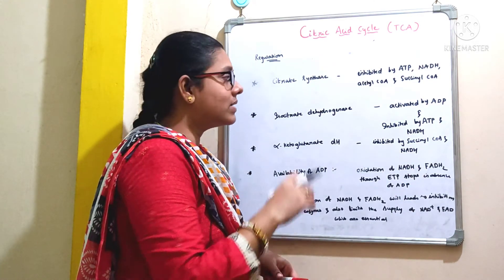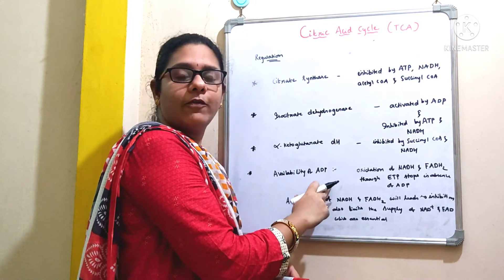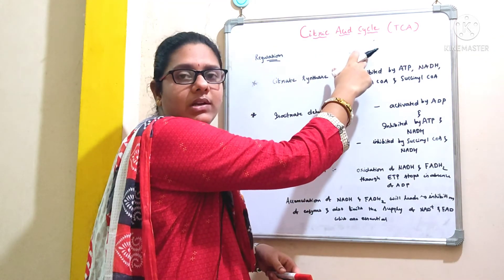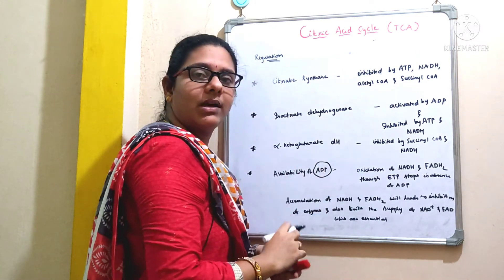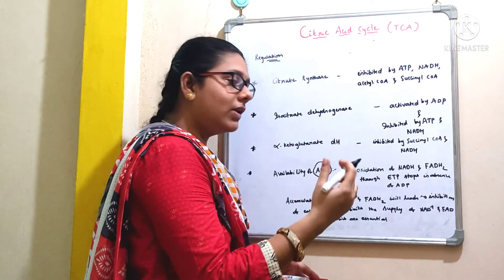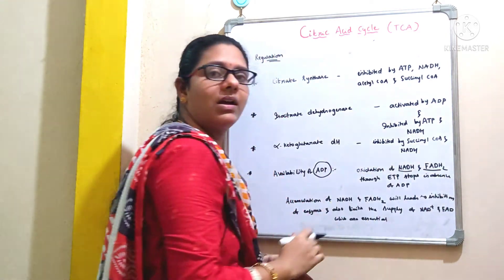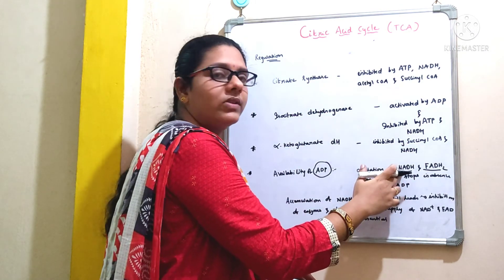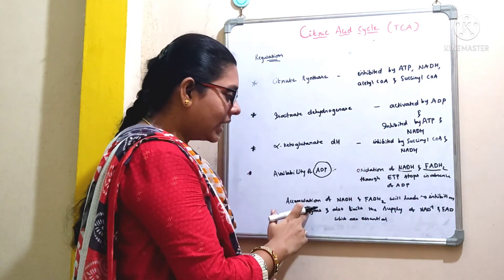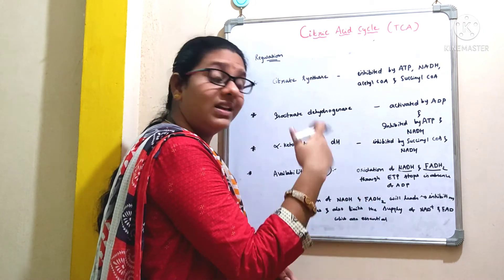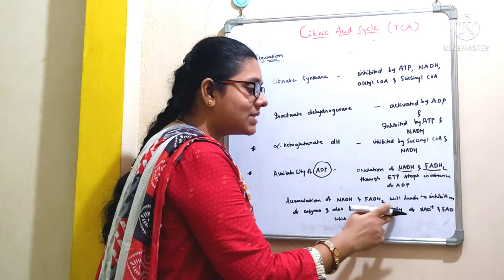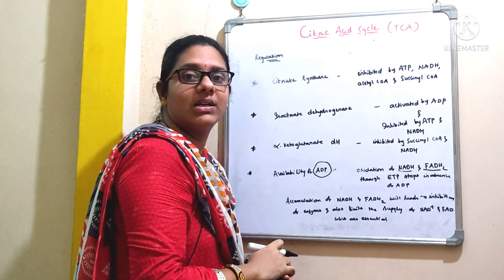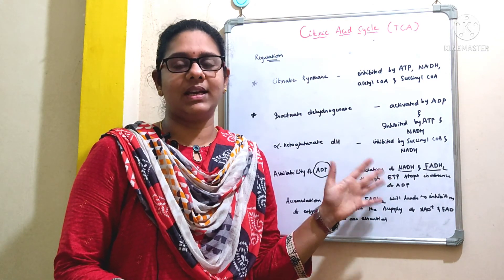Another important regulatory factor of the TCA cycle is the availability of ADP. In the absence of sufficient ADP, there will be no oxidation of NADH and FADH2 through the electron transport chain. If there is no oxidation, there will be accumulation of NADH and FADH2, which leads to inhibition of enzymes and also limits the supply of NAD+ and FAD, which are very essential for the TCA cycle to proceed. This is all about the TCA cycle and its regulation.